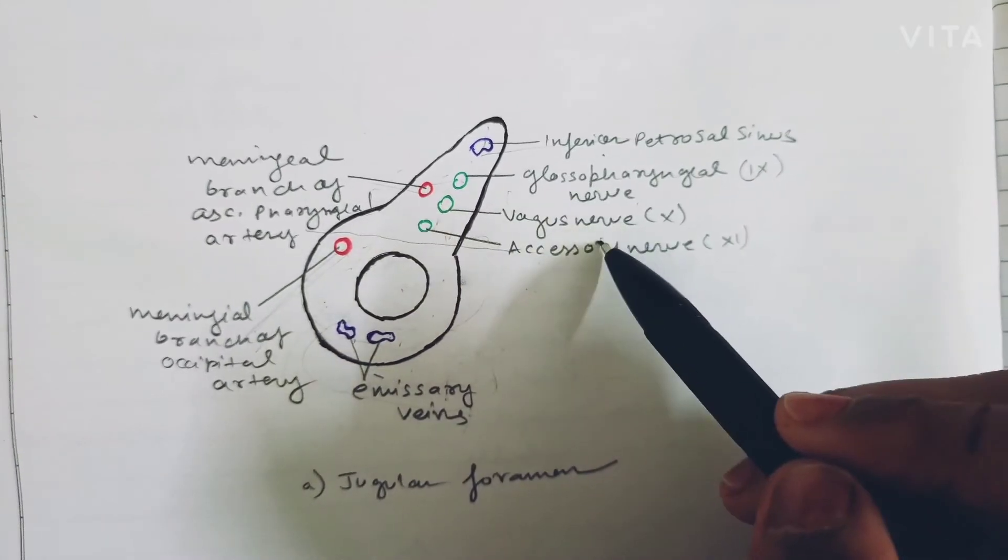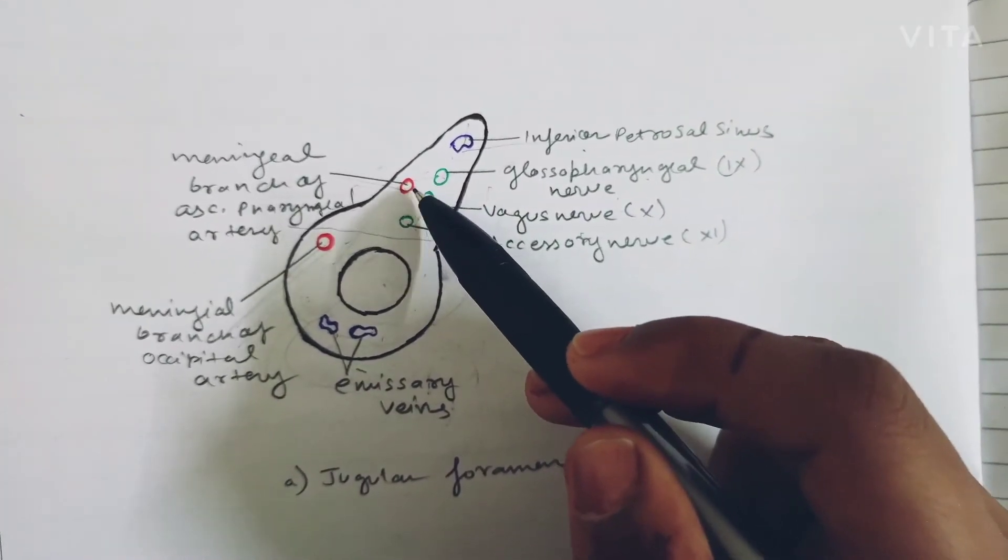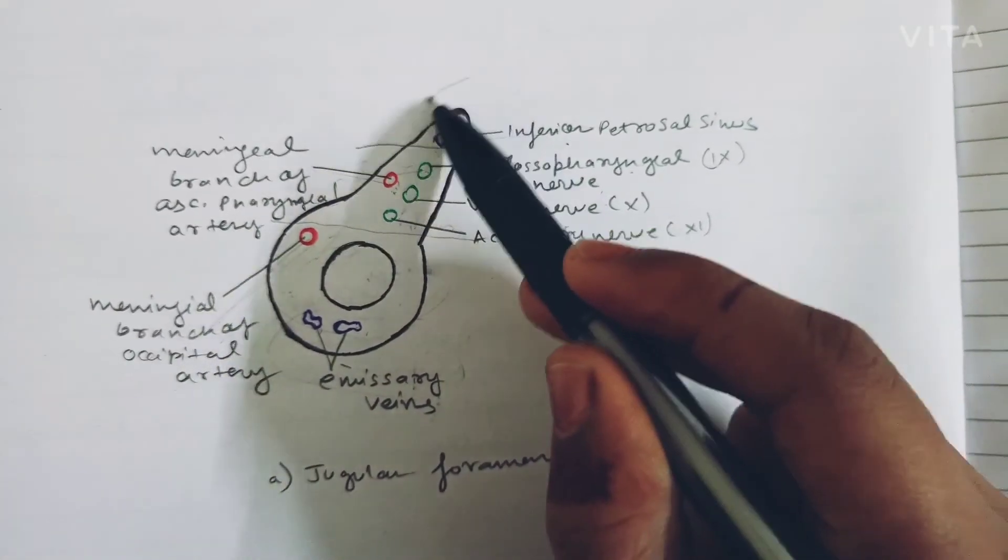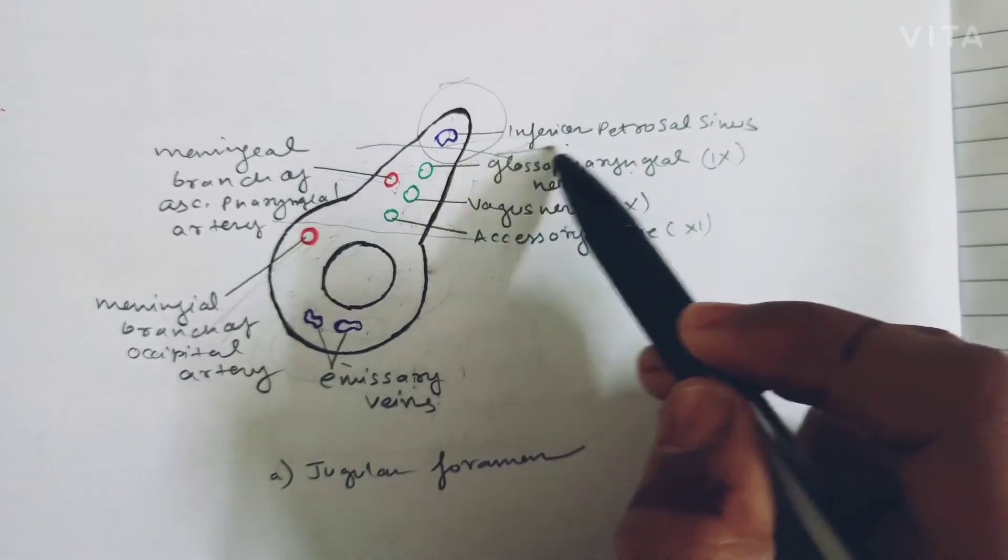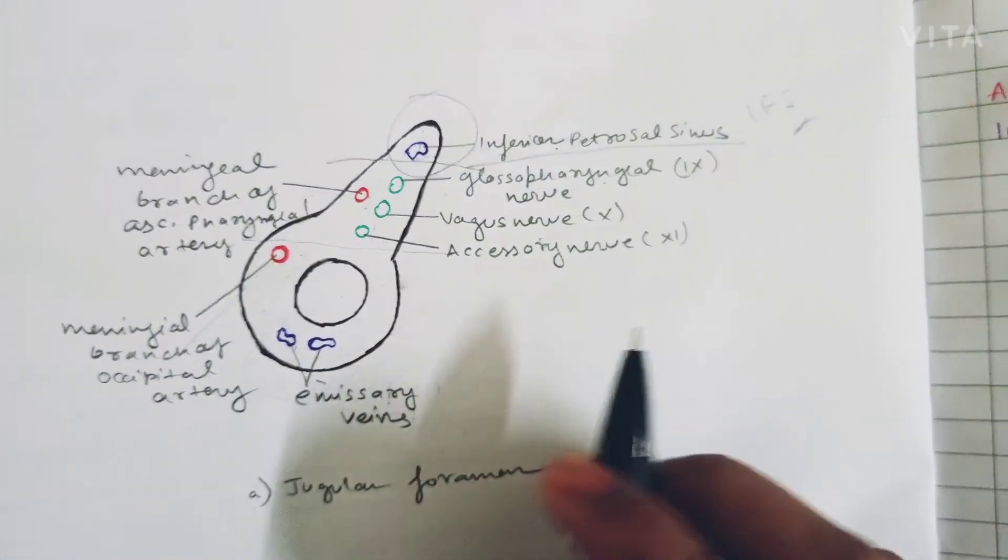9th, 10th, 11th and MBPA - meningeal branch of pharyngeal artery. This was the middle, and this was the anterior part, which is inferior petrosal sinus or IPS. Thank you.